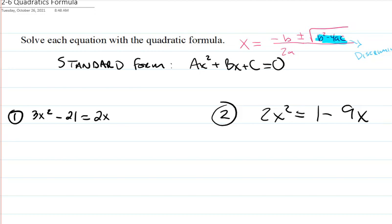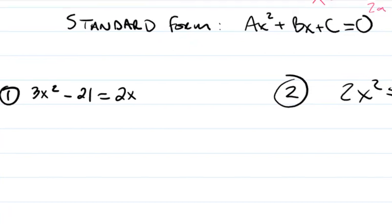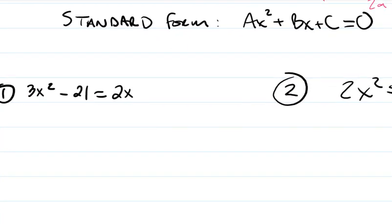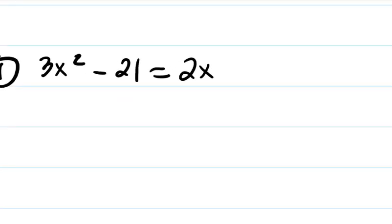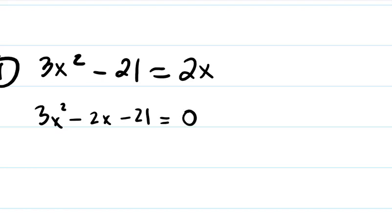Looking at example one, it's definitely not set equal to zero, so we've got to move that around. We move the 2x that's on the right to the other side. Written in standard form: 3x squared minus 2x minus 21 equals zero. There are three terms here.